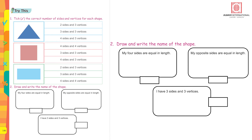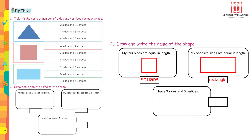Now do numbers 2 and 3 on your own. In question 2, draw and write the name of the shape. 'My 4 sides are equal in length' — which shape? Exactly, a square. Now draw a square. 'My opposite sides are equal in length' — yes, this is a rectangle. 'I have 3 sides and 3 vertices' — yes, it's a triangle.